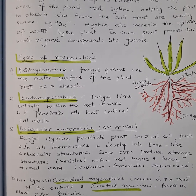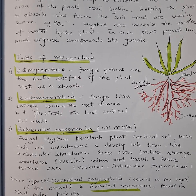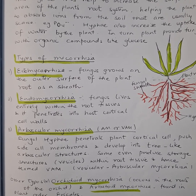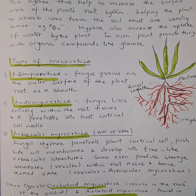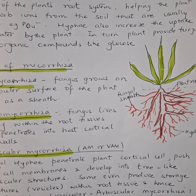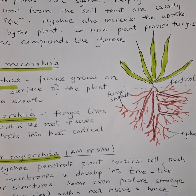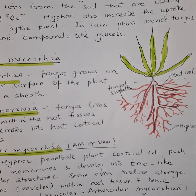In ectomycorrhiza, 'ecto' means outside. So the fungus grows on the outer surface of the plant root as a sheath, as can be seen clearly in the diagram.